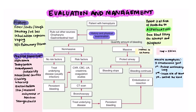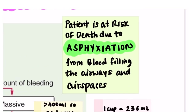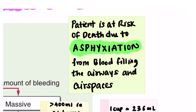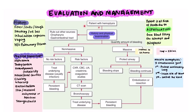Now let us move to evaluation and management. Patients with hemoptysis are at risk of death due to asphyxiation — blood fills the airways and spaces, leading to asphyxia and death. Whenever a patient with hemoptysis presents to you, the first and most important step is history and physical examination. History can give clues to the cause: fever, chills, and cough suggest infection; smoking and weight loss suggest malignancy.